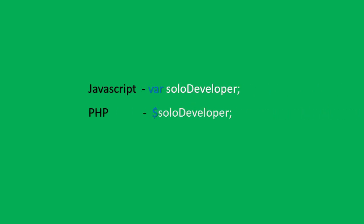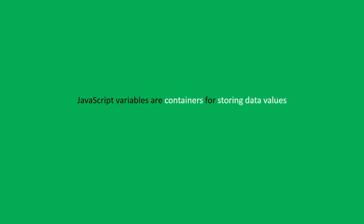For example, if you're creating a variable in JavaScript you declare the 'var' keyword, which is short for variable, and then your variable name — in this case 'soloDeveloper'. But if you're creating a variable in PHP, you need to use the dollar sign followed by your variable name. In one sentence: JavaScript variables are containers for storing data values and then retrieving them to use in our programs.